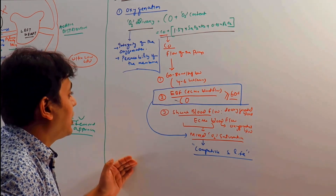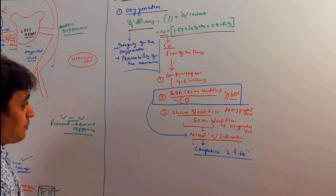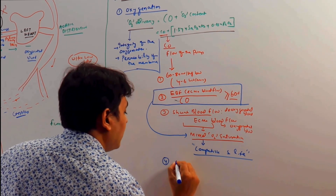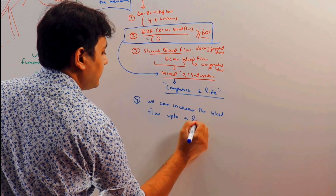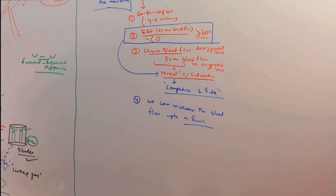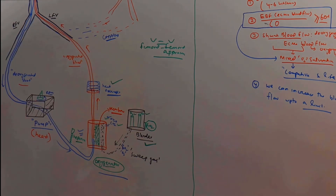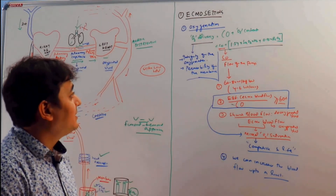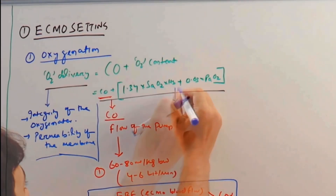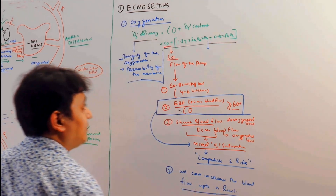For example, if the patient's cardiac output is 10 liters, you have to provide an ECMO blood flow of 6 liters per minute. However, in ECMO we can only increase blood flow up to a limit. In a normal person we can increase cardiac output beyond limits, but in ECMO the cardiac output is limited to a certain value.